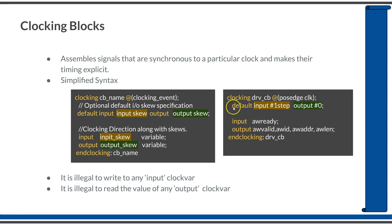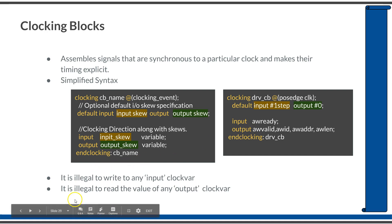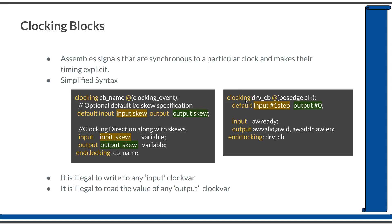If you are not defining the default clocking skew, you can explicitly define it along with the input and output variable declarations. It is possible to declare different skews for different input and output variables as well. Also remember that it is illegal to write to any input clocking variable, and it is illegal to read from any output clocking variable. This means any input signal can only be used for reading, and any output signal can only be used for driving.